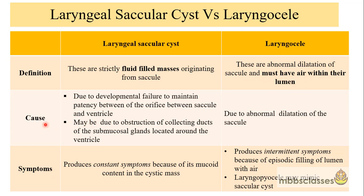The cause of the laryngeal saccular cyst is thought to be due to developmental failure to maintain the patency of the orifice between the saccule and the ventricle. The orifice between the saccule and the ventricle measures about 0.5 to 1 millimeter, and failure to maintain patency may lead to saccular cyst formation. A second proposed theory is obstruction of the collecting ducts of the submucosal glands located around the ventricle.